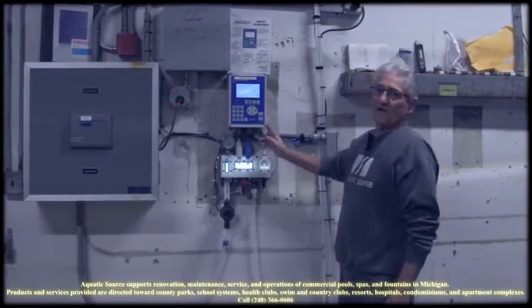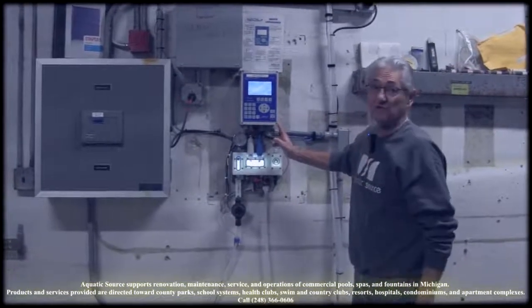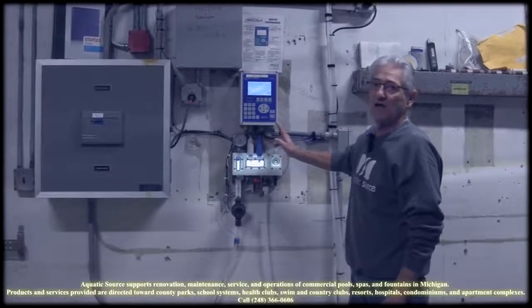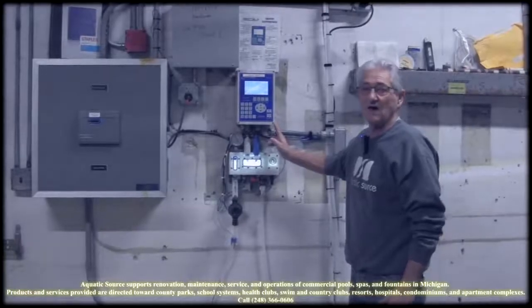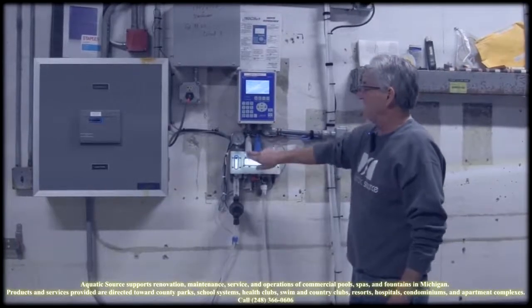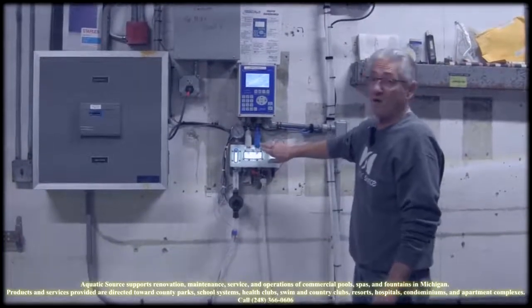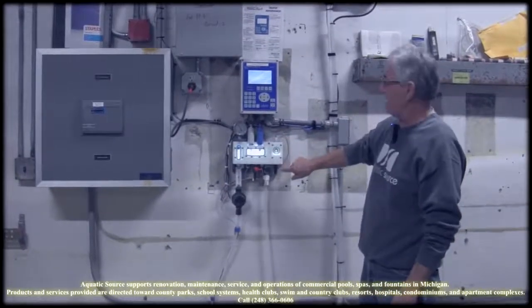Here we've got the Bex control. This is doing the water chemistry in the pool. It's also doing different sensors that I'll talk about in a minute. We have a pH probe, an ORP probe, and the lighted flow cell.